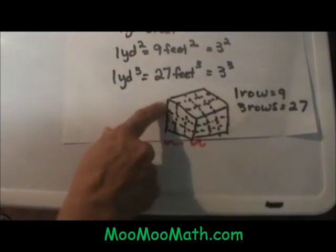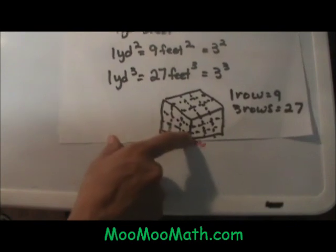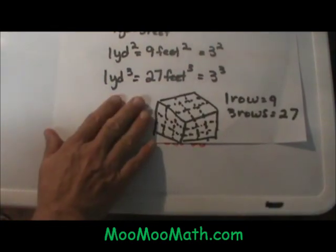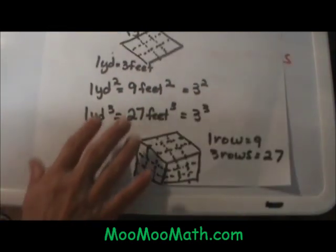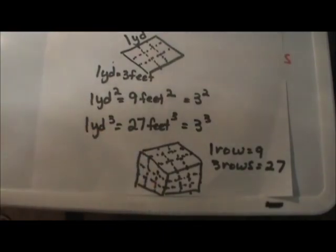You have 9 in each row, and you have 1, 2, 3 rows, which make 27 little cubes inside of the Rubik's cube. So that is how you convert and think about the ratio of measurements.